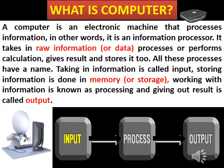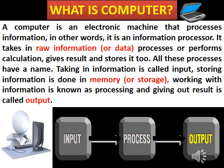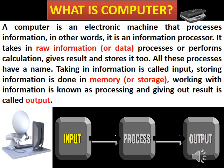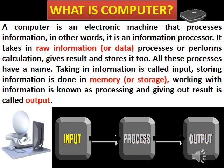What is a computer? A computer is an electronic machine that processes information. In other words, we can say it is an information processor. It takes in raw information or data, processes or performs calculations, gives a result and stores it too. Taking in information is called input. Storing information is done in memory or storage. Working with information is known as processing, and giving out results is called output, as you can see in the picture given below.